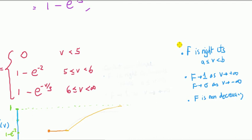A technical point: F is right-continuous. If you've done a course in real analysis you'll understand what this means — that's why there are symbols with strictly greater than or equal to some value less than another value. In some countries, such as Russia, they define F as left-continuous instead, and the inequalities swap around. As long as you're consistent, that's fine. If it's not a mathematical statistics course, you can probably get away with not worrying too much about strict inequalities.